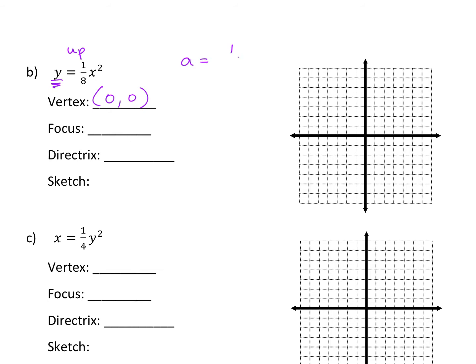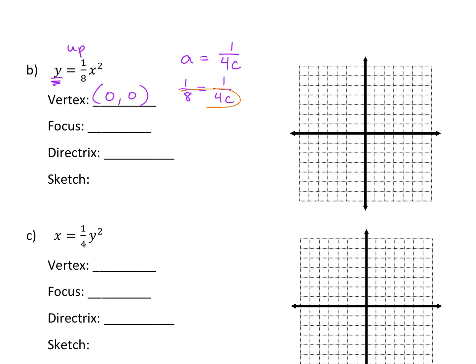Remember your formula: a equals 1 over 4C. So what is my a value? One-eighth equals 1 over 4C. One over 8 has to equal one over 8. So C is 2. If you want to cross multiply: 8 equals 4C, divide by 4, C is 2.